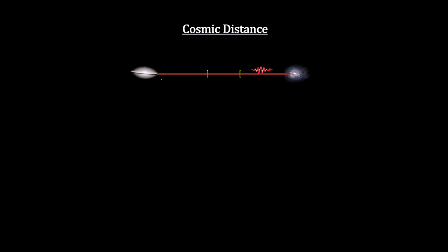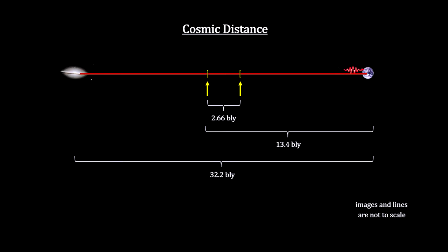In fact, GN-z11 was less than 2.7 billion light years away from us when the light started its journey, and the galaxy is now over 30 billion light years away.